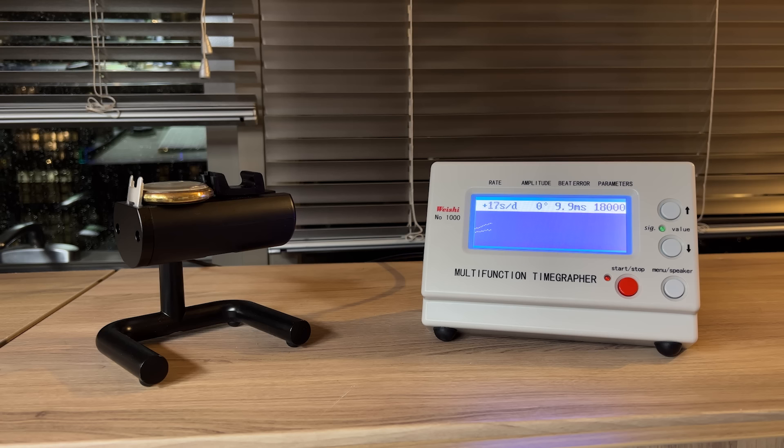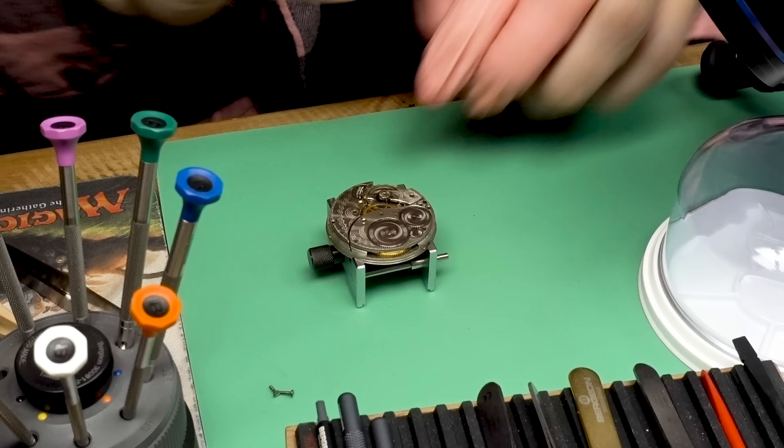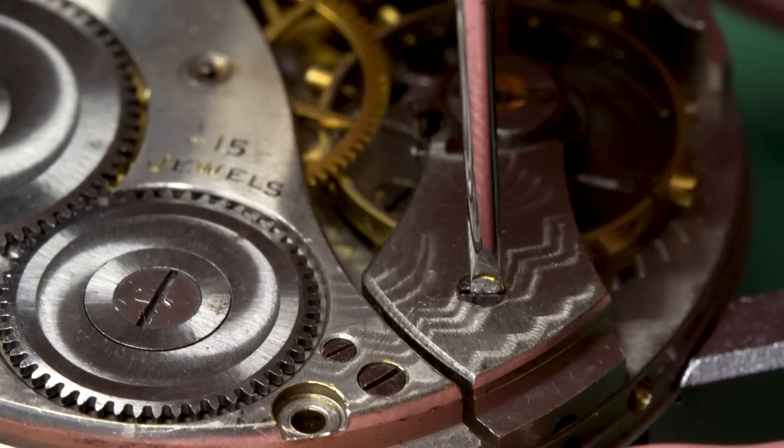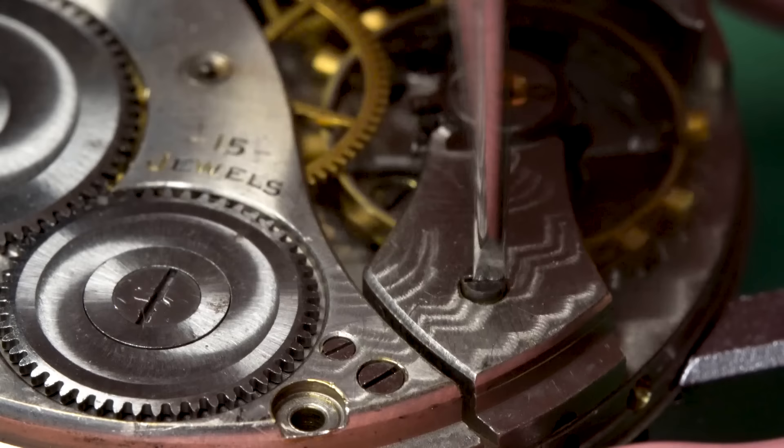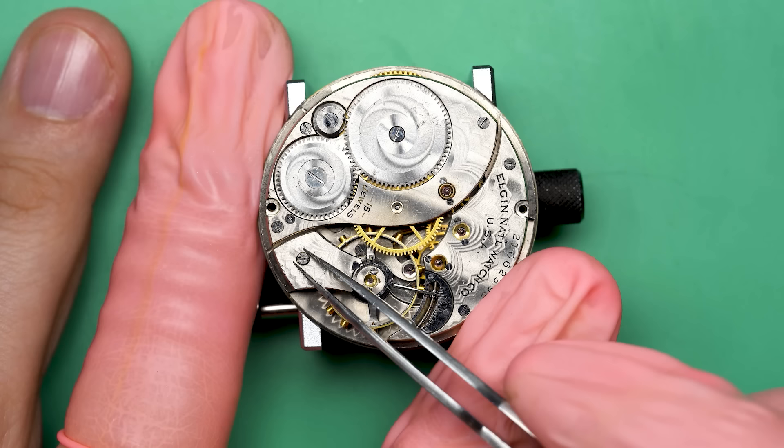Oof. Not great. You can see pretty low amplitude, although the rate's actually okay. The beat error is off quite a bit. So this thing's going to need a tune-up for sure. But this is promising. This watch is running and actually reasonably, although the amplitude's really low. So let's see what we can do with it.